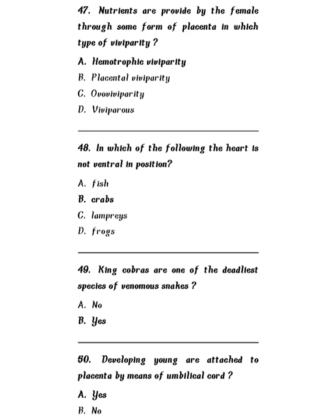Question 49: King cobras are one of the deadliest species of venomous snakes — this is absolutely right. King cobras are one of the deadliest species of venomous snakes. Question 50: Developing young are attached to the placenta by means of the umbilical cord — yes or no? Absolutely correct. Developing young are attached to the placenta by means of the umbilical cord.